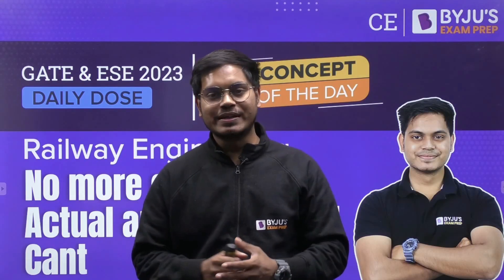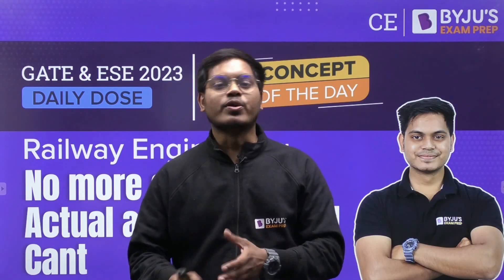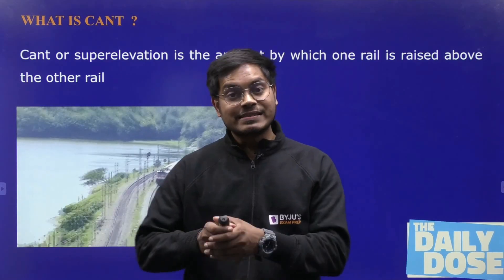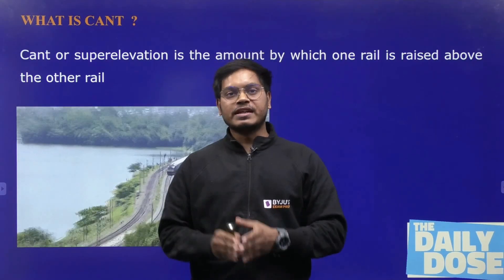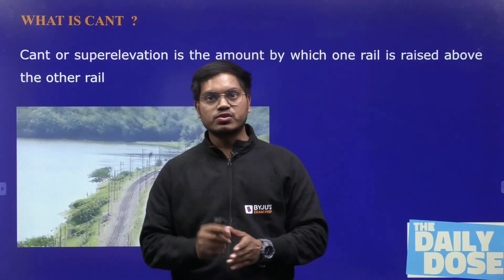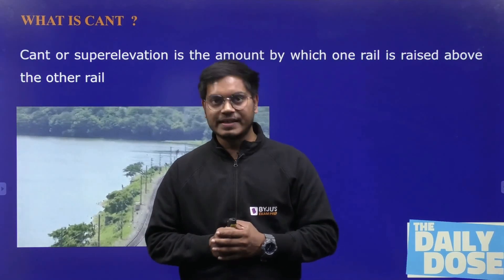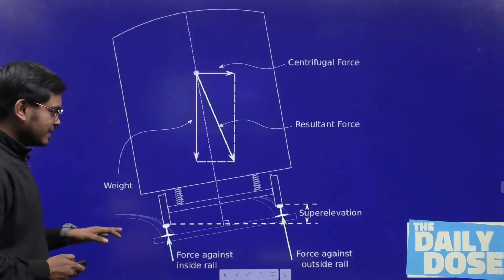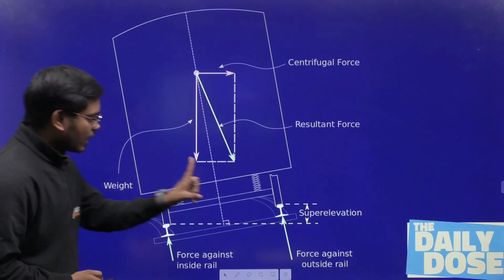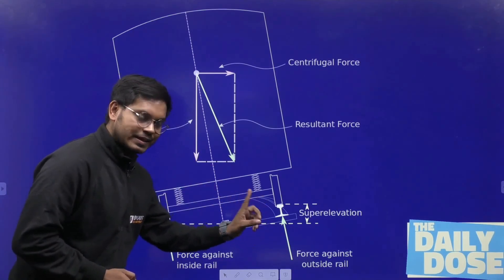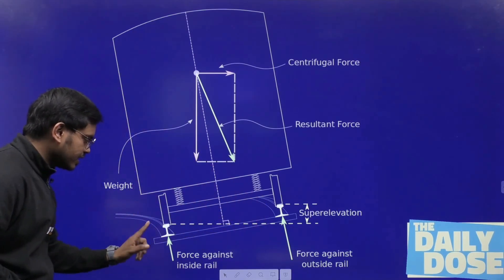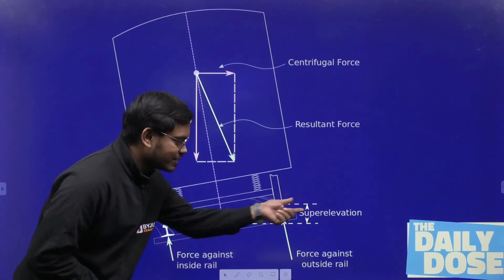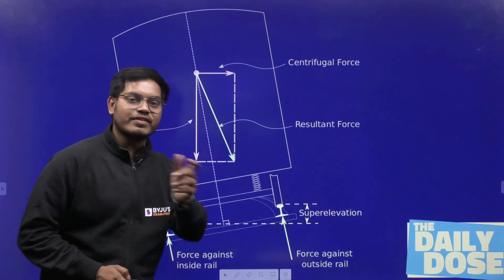Let's begin with what is cant. Cant, or superelevation, is the amount by which one rail is raised above the other rail. With the help of the diagram, you can clearly see how the outer rail is raised with respect to the inner rail by a certain amount, and that amount is called superelevation or cant.